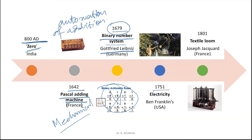Then in 1751, electricity came — another important milestone for the evolution of computer systems, discovered by Benjamin Franklin. Then around 1801, the Jacquard textile loom was invented by Joseph Jacquard in France. This machine used punch cards to stitch different designs onto cloth according to the punch card pattern.